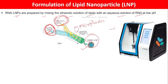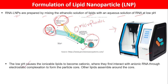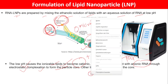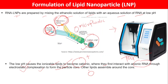The devices that can be used in the formulation of mRNA-LNP include, for example, the Ignite device from Precision NanoSystems. The low pH causes ionizable lipids to become cationic or positively charged, where they first interact with the anionic RNA — because of the phosphate group, RNAs are negatively charged. Therefore, there is interaction through electrostatic complexation to form the particle core. First, the particle core is formed from ionizable lipids plus RNA, and then all the lipids assemble around this particle core, resulting in the formation of the lipid nanoparticle.